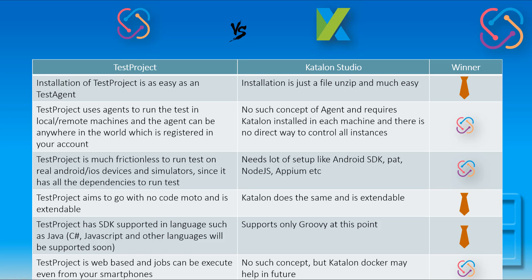The clear winner for agent-based remote execution is TestProject. TestProject is also much more frictionless to run tests on real Android and iOS devices and simulators since it has all the dependencies built in. Katalon Studio requires a lot of setup — Android SDK installation, PATH configuration, Node.js, Appium, etc. — whereas nothing extra is required in TestProject. For the no-code model, both tools aim for that and are extendable, so the winner there is a tie.